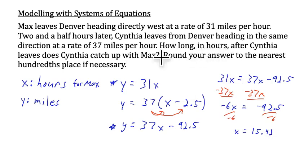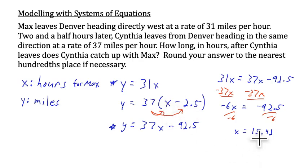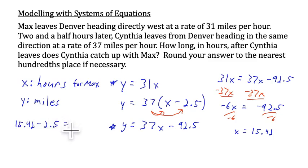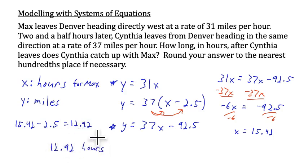But the question asks how long after Cynthia leaves does she catch up with Max. Since she travels 2.5 hours less than Max, we subtract 2.5 from 15.42. Working that out: 15.42 minus 2.5 equals 12.92. So Cynthia catches up to Max after 12.92 hours.